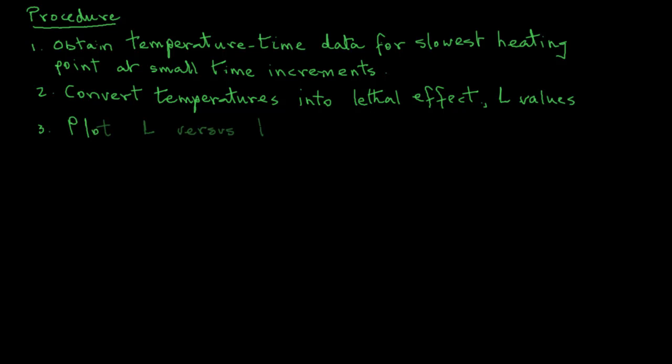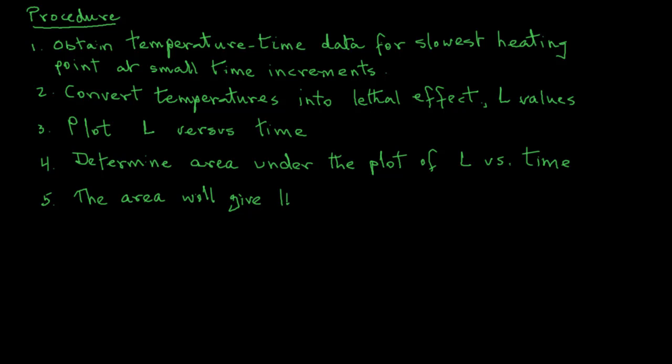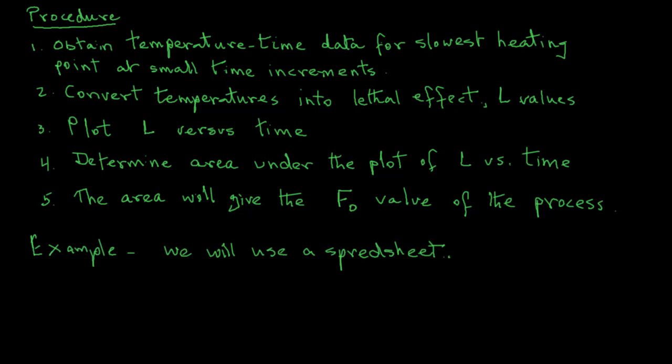Next, we will plot L versus time. And then from that plot, we will determine the area. The area will be the total lethality that will be equivalent to heating at 121.1 degree C when the Z value is 10 degree C. Or in other words, it will give us the F0 value for the process. Now we will consider an example by using a spreadsheet.